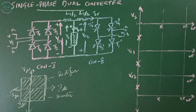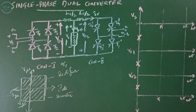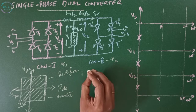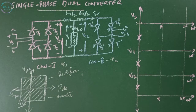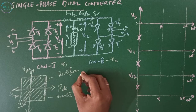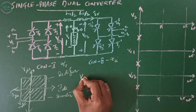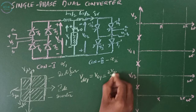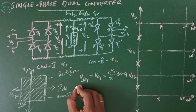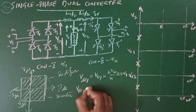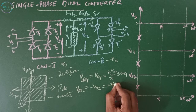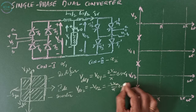A dual converter consists of two converters — converter one and converter two — where converter one is operated at a firing angle of alpha one and converter two is operated at a firing angle of alpha two. A single phase dual converter is the combination of two converters as shown in this figure. The output voltage of the full-wave converter, V0 one, is given by two Vm by pi times cos alpha one. For converter two, VDC two equals minus V0 two, which equals minus two Vm by pi times cos alpha two.